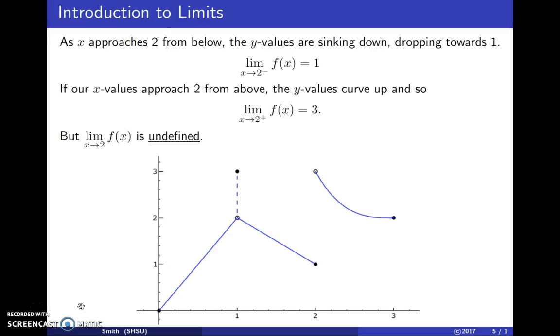Now the limit as x approaches two is undefined because we have a one-sided limit approaching two from below that gives us one, and a limit as x approaches two from larger values giving three. If we leave off the plus sign or the minus sign, we then allow ourselves to approach two from either direction. And a limit has to be unique. In this case, we're getting contradictory answers. So the two-sided limit, the limit as x approaches two of f(x) here is undefined.